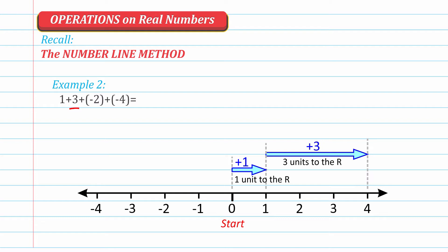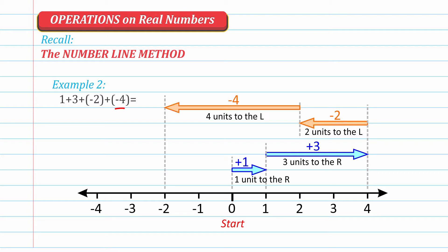From the end of the second arrow, we draw the third one. The third addend is negative 2, meaning 2 units to the left. And lastly, the fourth addend is negative 4, which is 4 units to the left. We then look at the endpoint of the last arrow — it points to negative 2. Therefore, the sum of 1 plus 3 plus negative 2 plus negative 4 is equal to negative 2.